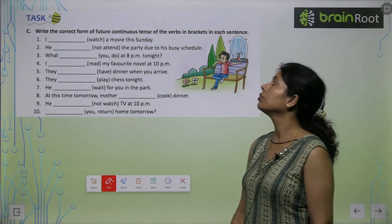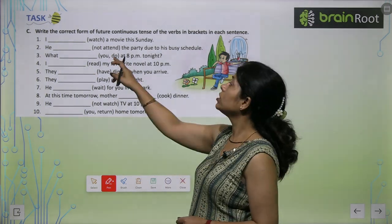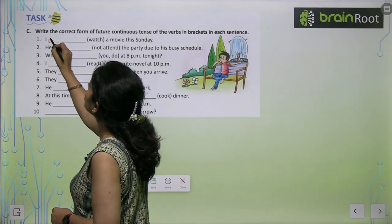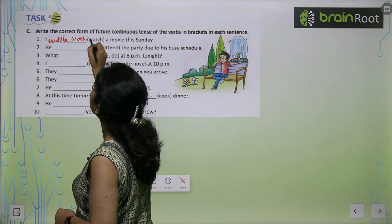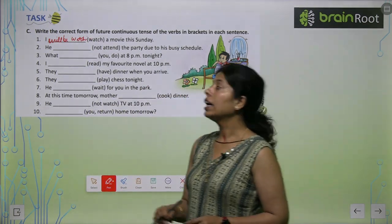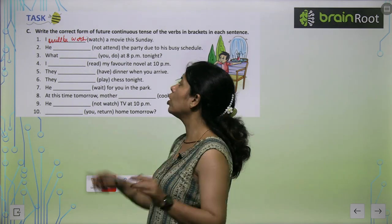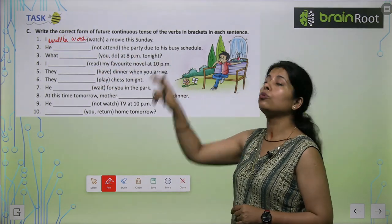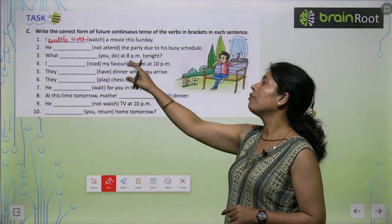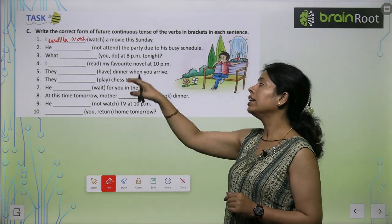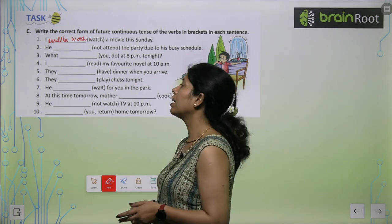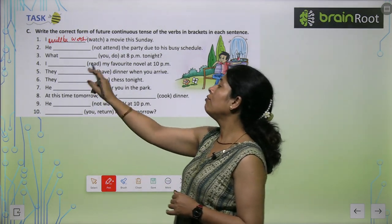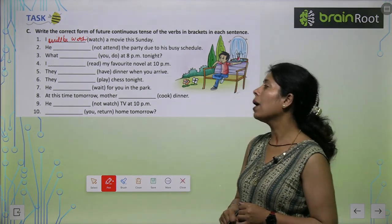Write the correct form of future continuous tense for the word in the bracket. 'I will be watching a movie this Sunday.' 'He will not be attending the party due to his busy schedule.' 'What will you be doing at 8 pm tonight?' 'I will be reading my favorite novel at 10 pm.' 'They will be having dinner when you arrive.' 'They will be playing chess tonight.' 'He will be waiting for you in the path.'